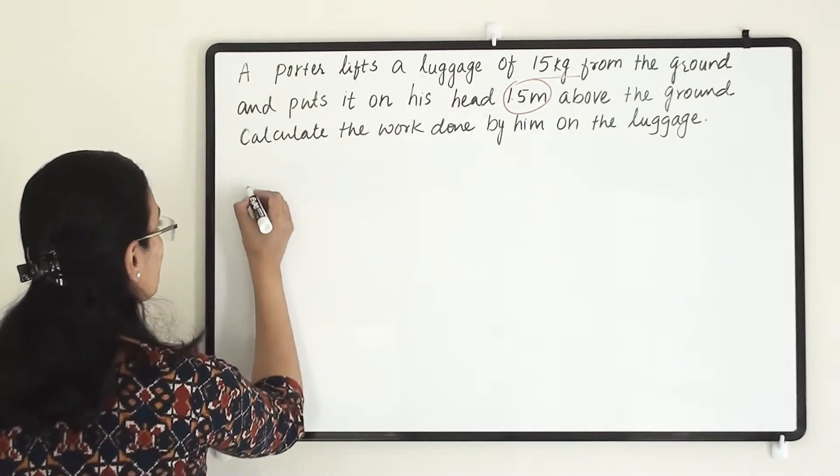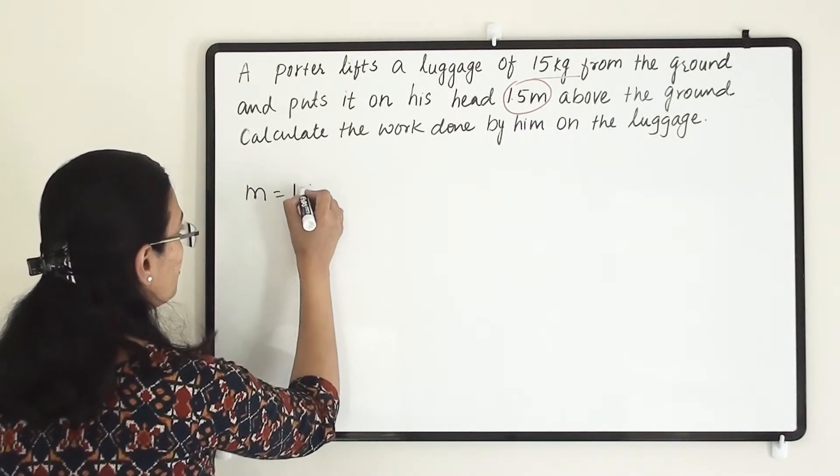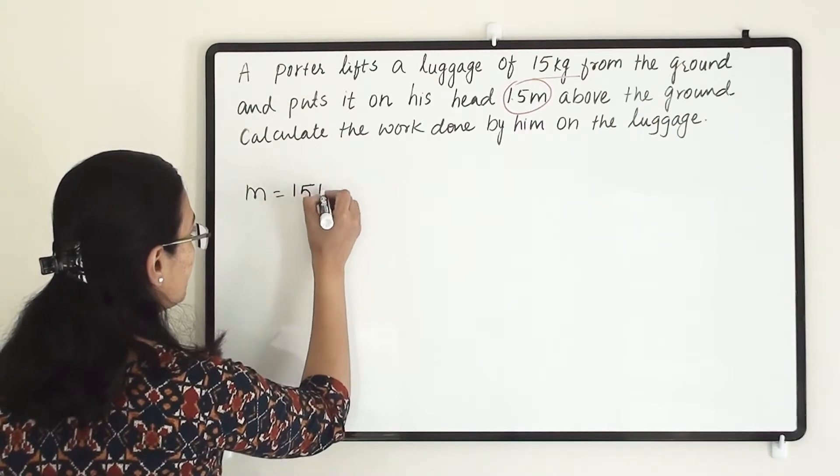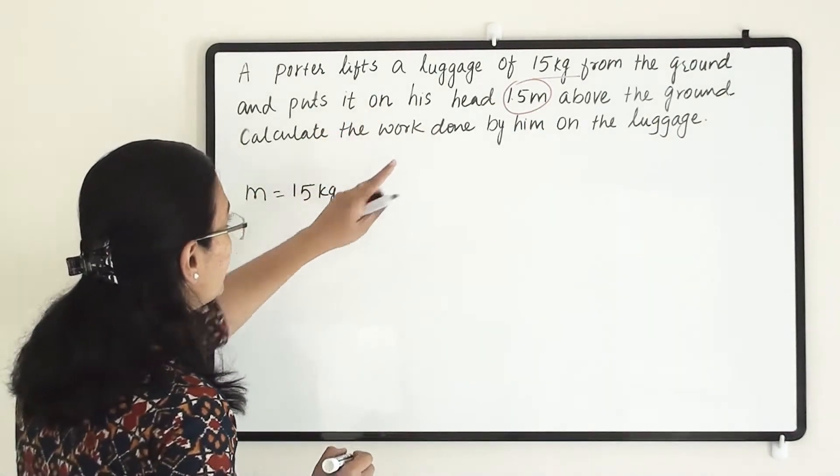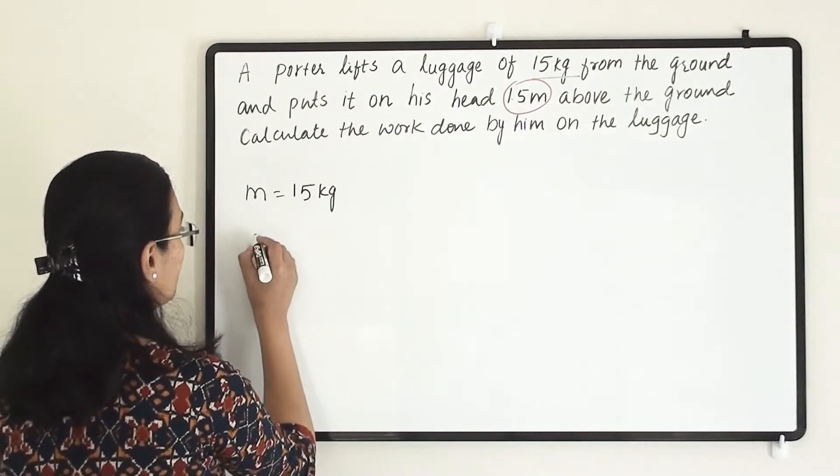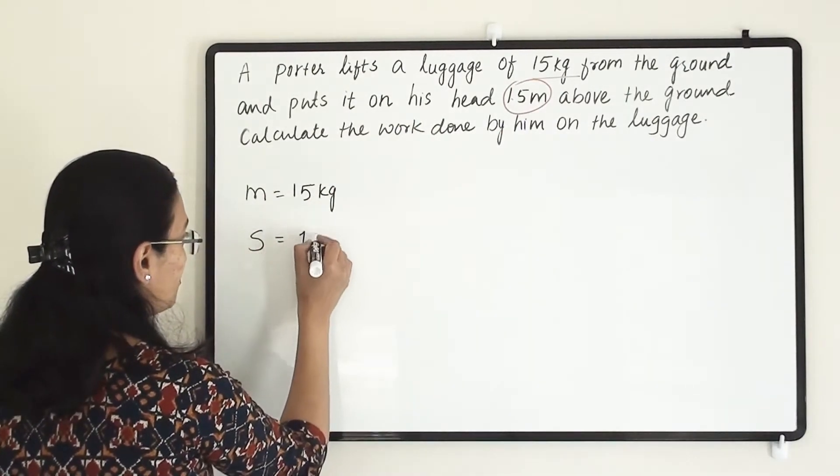So this much is the mass, m equals to 15 kg. That much mass is there for the luggage. Then he lifts this much. That means that is a distance, so 1.5 meter.